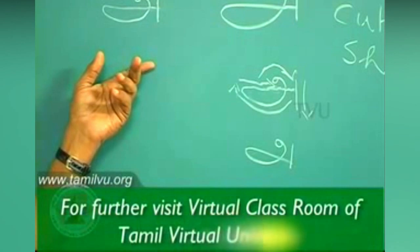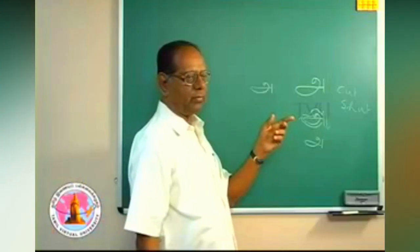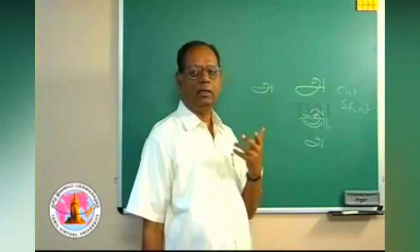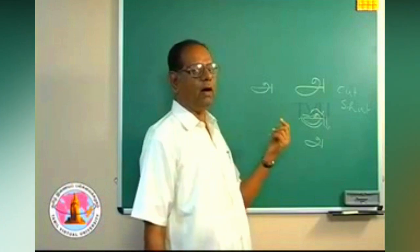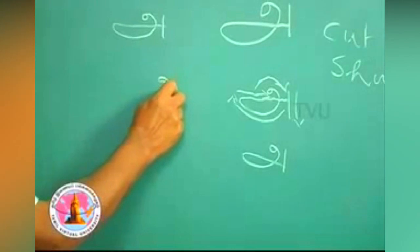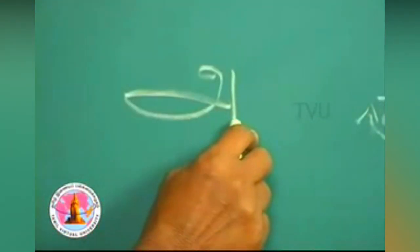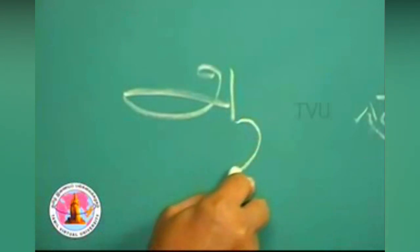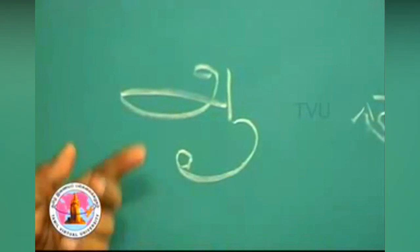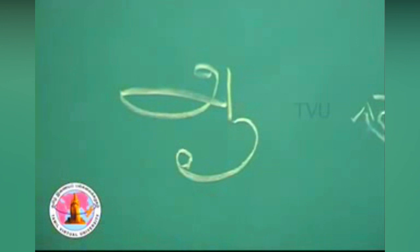Now we go to the second letter. The second letter 'ஆ' (long ā) is only an elongation of 'அ'. It is written by first forming 'அ', and then from the end we take a curl upward and end it with a circle. So this becomes 'ஆ'. Now let us see how it is written.